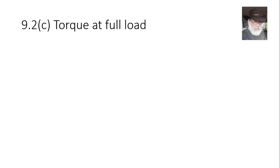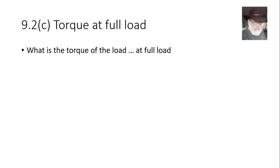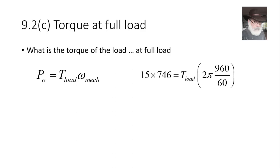Part C asks for the torque of the load at full load. Using the mechanical power formula — output power equals torque times angular velocity in radians per second — we know both omega_mech (from the 960 RPM speed) and P_out (the rated power). Solving for T_load gives 111 newton-meters.